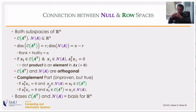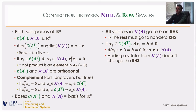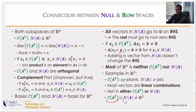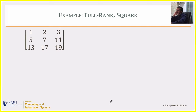All vectors in the null space go to zero; those not in the null space go to the column space. Adding a null space vector to a row space vector doesn't change the output. Note that most vectors in the input space are neither in the row space nor in the null space — they are linear combinations of vectors from both, and they all map to the column space. The span of the row space and null space together covers the entire input space ℝⁿ.